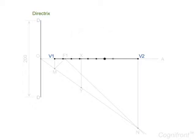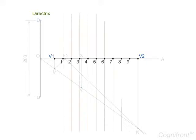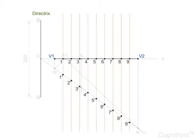Now we shall divide the major axis V1V2 into 10 equal parts. At each of these points draw perpendicular lines on either side of the axis. Mark the points where these vertical lines intersect the line ON.